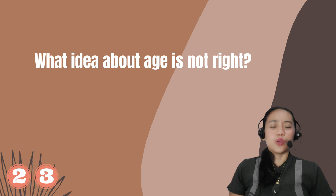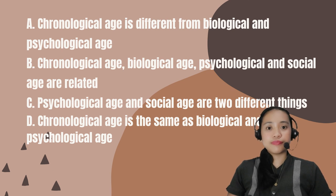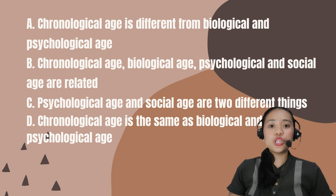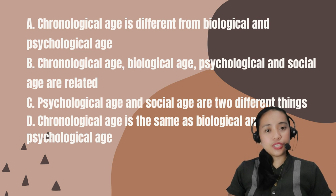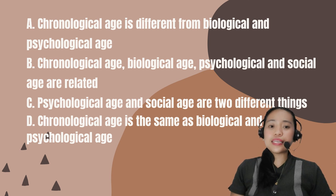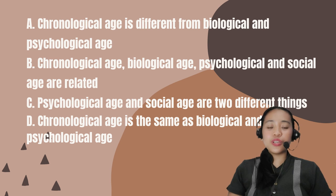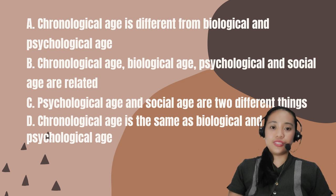Number 23. What idea about age is not right? A. Chronological age is different from biological and psychological age. B. Chronological age, biological age, psychological age, and social age are related. C. Psychological age and social age are two different things. D. Chronological age is the same as biological and psychological age.